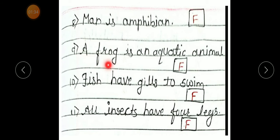Number 9. A frog is an aquatic animal. False. Number 10. Fish have gills to swim. False. Fish have gills to breathe. Number 11. All insects have four legs. False.